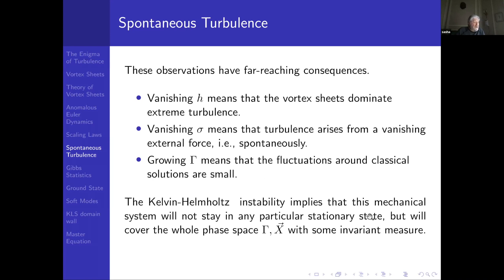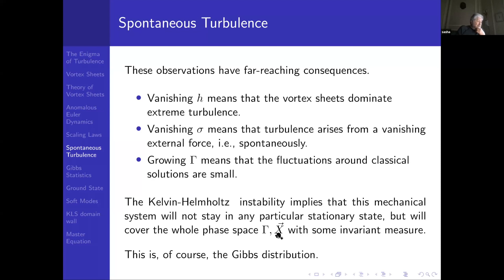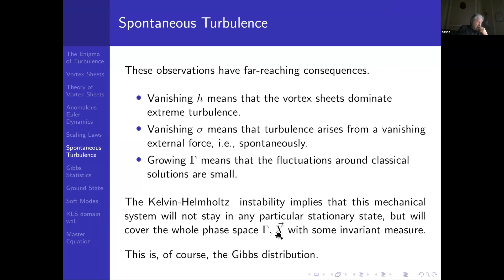Kelvin-Helmholtz instability implies that this mechanical system will not stay in any particular stationary states, but will recover the whole phase space with some invariant measure. Because there's always temperature, and this is the Gibbs distribution. But in the case of vortex sheets, it turns out that vortex sheets at arbitrary temperature have enhanced fluctuations because they have a two-dimensional zero mode — two-dimensional massless modes — and those massless modes have critical phenomena at arbitrary temperature, as is well known from the XY model and other Goldstone modes in two-dimensional theories.